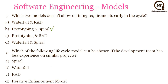The next question is: which lifecycle model can be chosen if the development team has less experience on similar projects? If your development team does not have experience on similar projects, things can be changed accordingly in upcoming quadrants. The answer will be Spiral Model, as it allows developing new quadrants or phases as well as going back to previous phases and changing them accordingly.